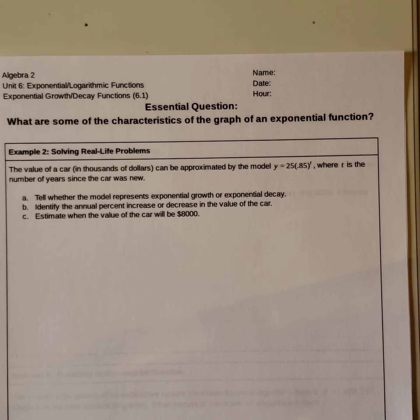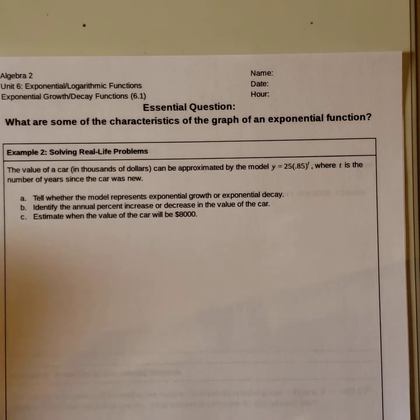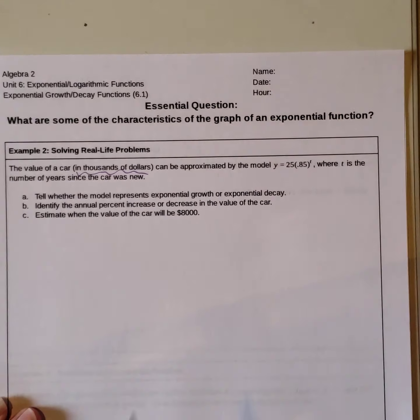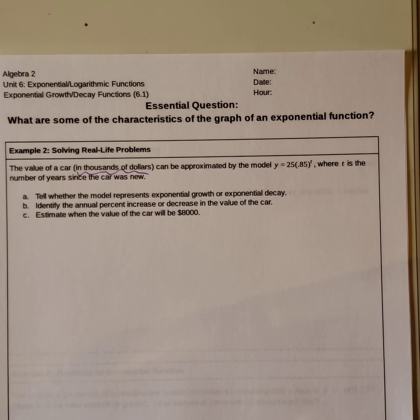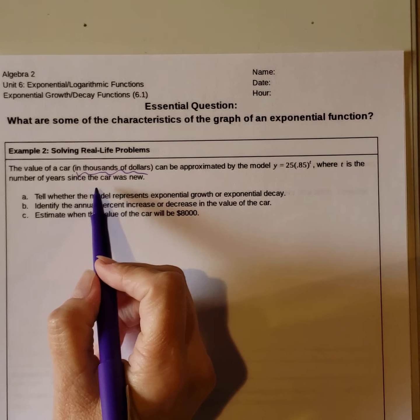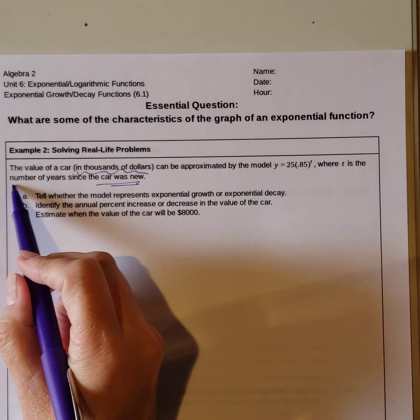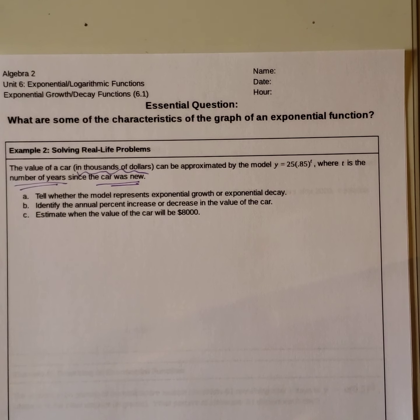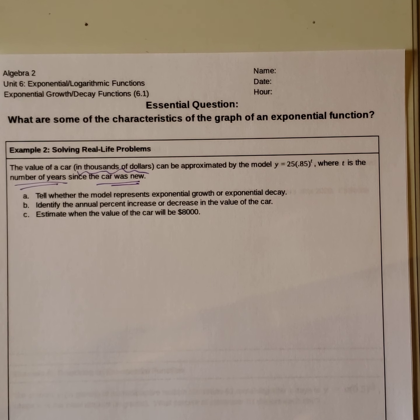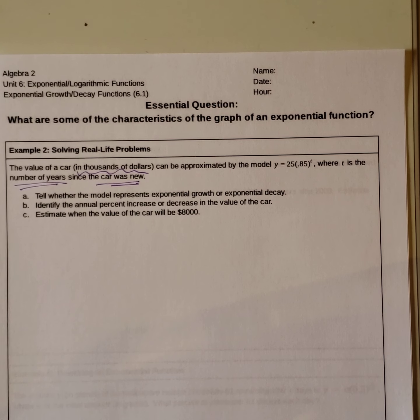So example 2, solving a real life problem. The value of a car in thousands of dollars can be approximated by the model y equals 25 times .85 to the t, where t is the number of years since the car was new. Part a, tell whether the model represents exponential growth or exponential decay. Part b, identify the annual percent increase or decrease in the value of the car. Part c, estimate when the value of the car will be $8,000.